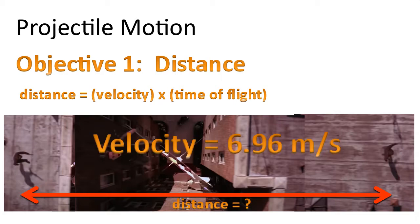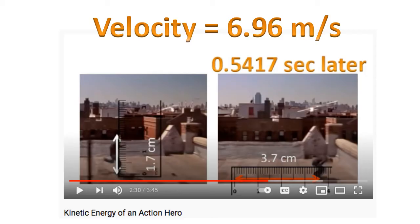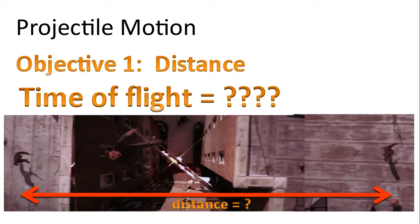Now the velocity is 6.96 meters per second. This velocity was determined from a previous analysis done in the following video, Kinetic energy of an action hero. If you're interested in that analysis you can see how we determine 6.96 meters per second. The time of flight - how do we get the time of flight from the video?